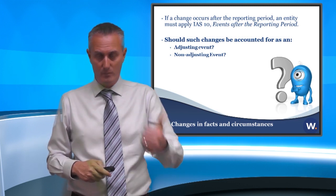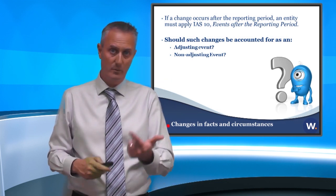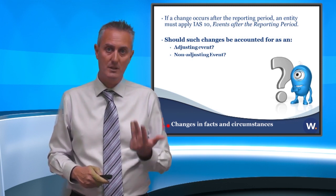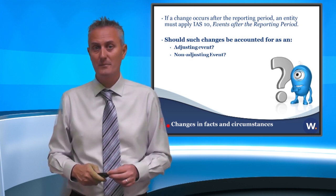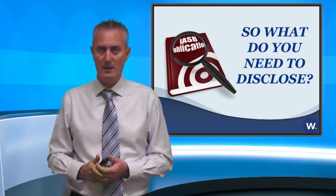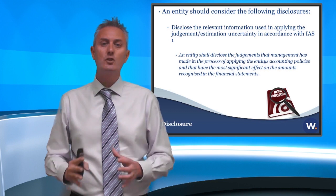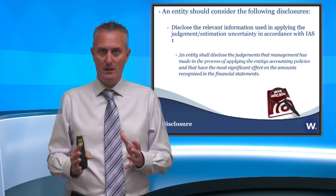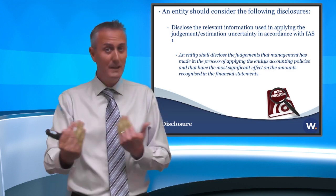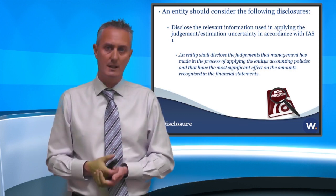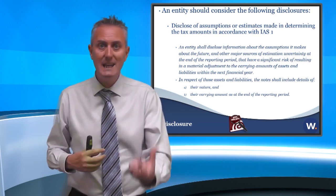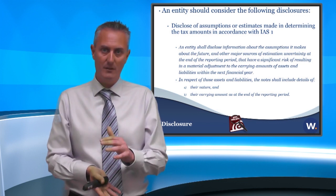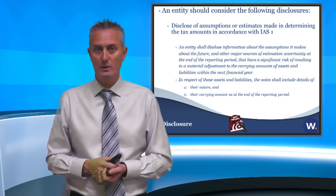Those effectively are the four things the IFRIC looked at: what is your unit of account, do we think it's probable that they'll accept our position, how do we determine the measurement, and what if there are changes in facts and circumstances. Last thing to touch on — what do you need to disclose? IFRIC 23 itself doesn't give you any specific disclosure requirements; it refers to other parts of IFRS. The first one it points to is IAS 1. IAS 1 says you're required to disclose any judgments you've made. The judgment about probability is quite a big judgment, and if this could materially impact your accounts, you need to disclose it as a key judgment. IAS 1 also says you need to disclose what assumptions you've made, where you've had key estimates, and what happens if those change — especially if this is material.